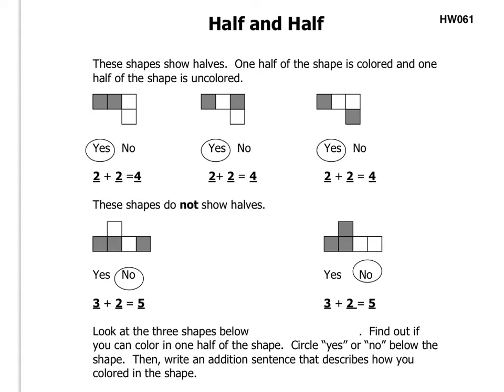Again, four blocks. Two are shaded, two are not shaded. So we can say two shaded plus two not shaded equals four. Circle yes.